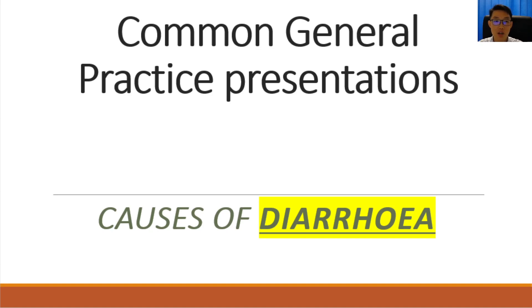Diarrhea can be classified as acute, which is diarrhea of recent onset, or chronic, which is diarrhea that has been happening over a course of several weeks or more. Let's begin.